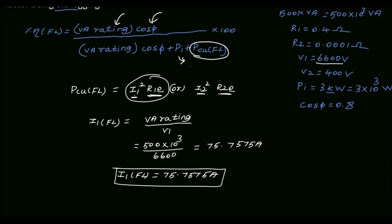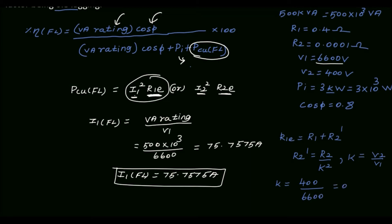Next we have to find R1E, the equivalent resistance referred to the primary side. R1E is R1 plus R2 dash, where R2 dash is the secondary winding resistance referred to the primary side. R2 dash equals R2 divided by k², and k is the transformation ratio V2/V1. So k equals 400 divided by 6600, which gives 0.0606.